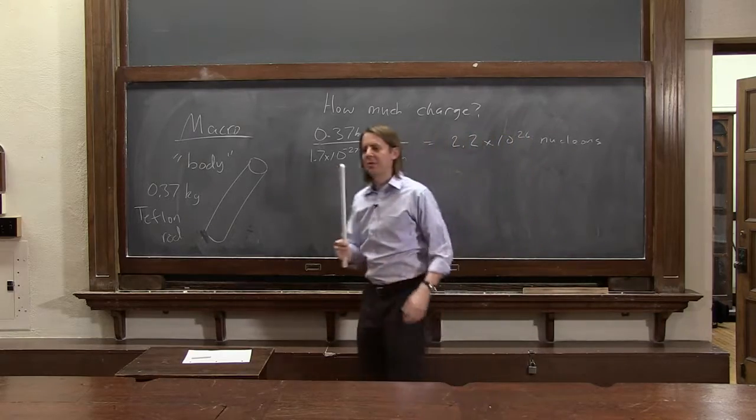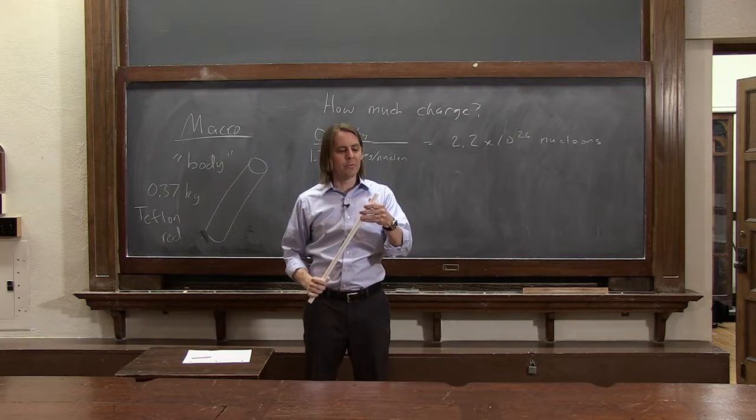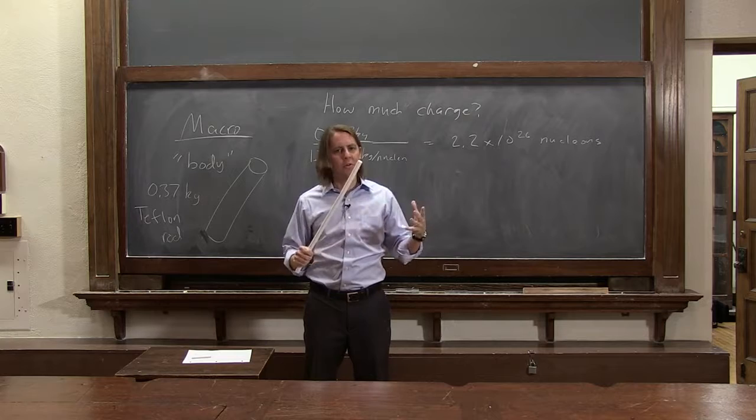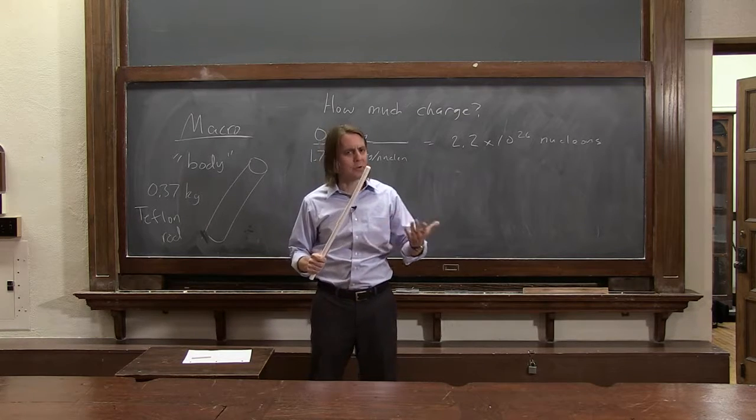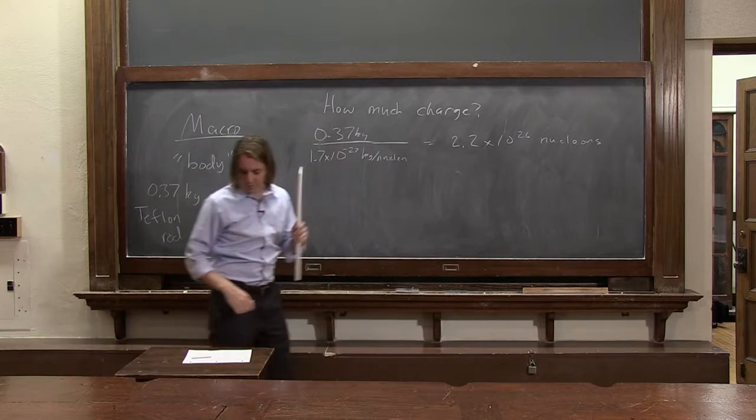So you actually don't need to know the chemistry of this thing or even what atoms are in it. If we know that it weighs 0.37 kilograms, we know that that mass is almost all in the protons and neutrons. The electrons don't weigh much. Then we can actually estimate the number of nucleons in this thing.